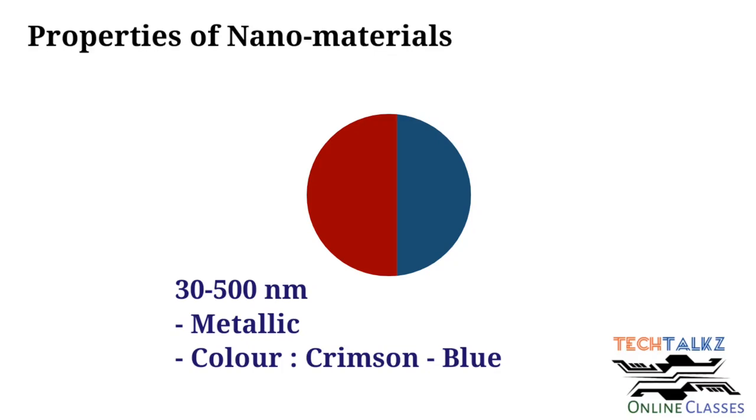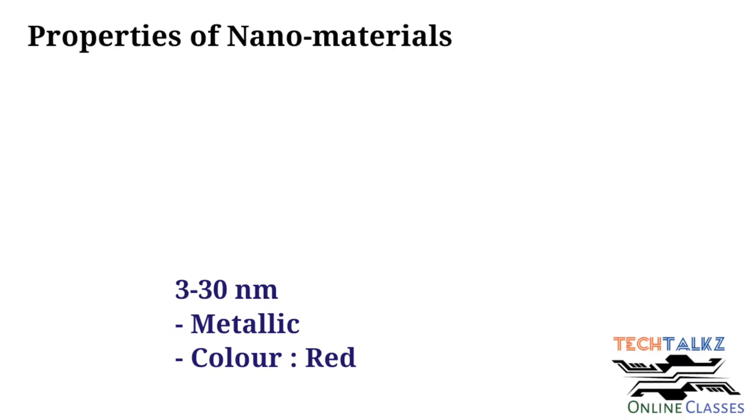The color will be between crimson to blue. If the size goes down to 3 to 30 nanometer, it will become red - red color particle. And still it will have the metallic property, and it will be transparent.